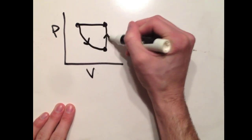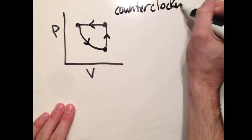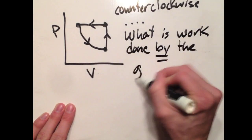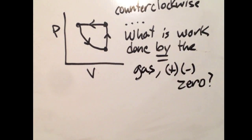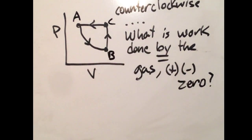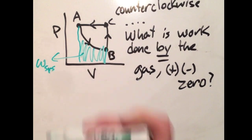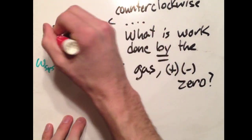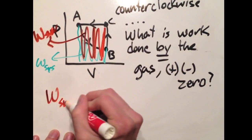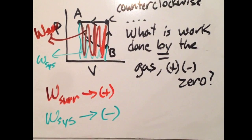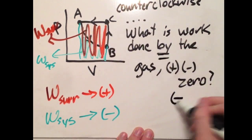Now for a cold pump, I'm working in a counterclockwise motion. So now, I'm going from A to B to C and then back to A. And I want to know if the work done by the gas is positive, negative, or zero. So from A to B, that is the work done by the system. From C to A, that is the work done by the surroundings. Since the surroundings is inside the triangle, that is positive. The system is going to be negative.